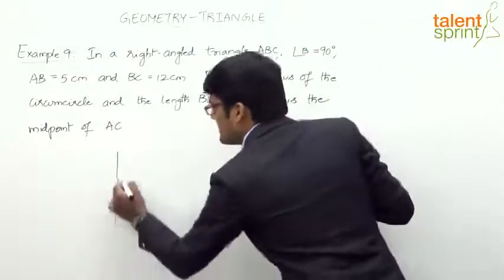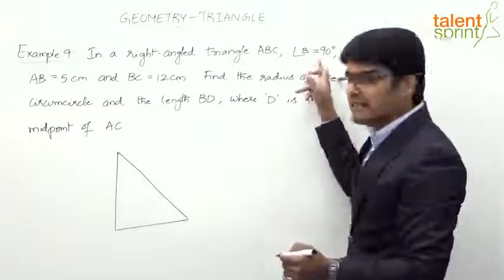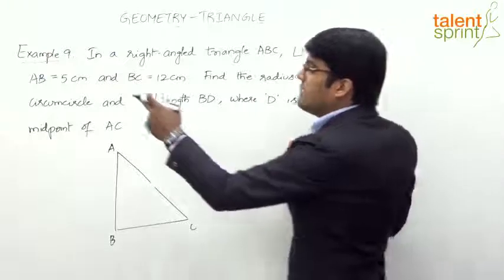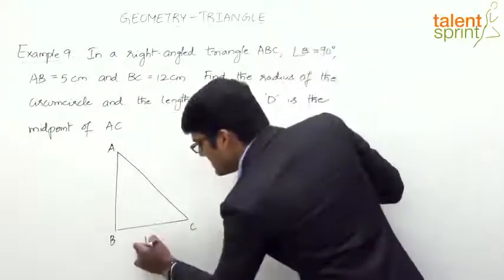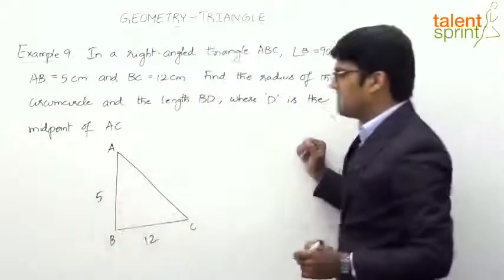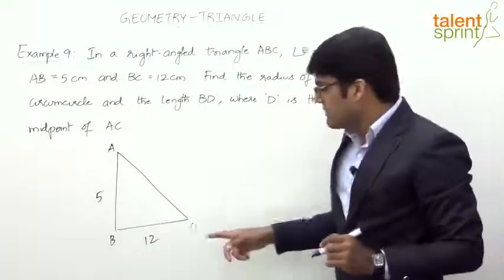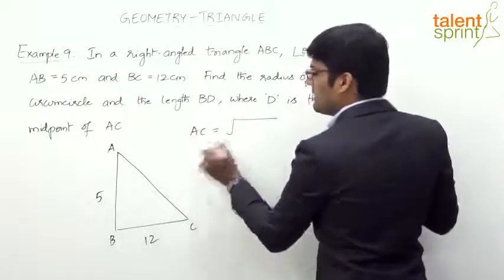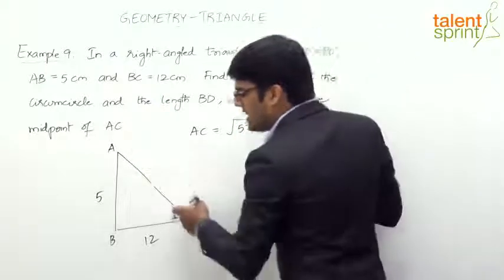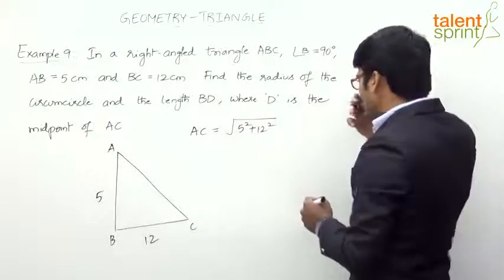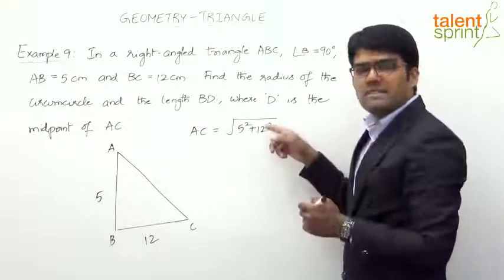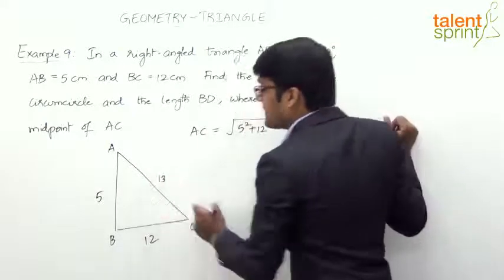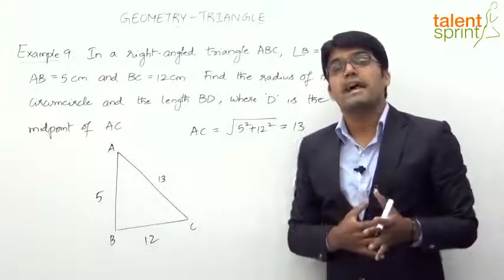Let's consider this right angle triangle. Angle B is 90 degrees, so this vertex is B, this is A, and this is C. AB is 5 centimeters and BC is 12 centimeters. By Pythagoras theorem, AC squared equals BC squared plus AB squared, so AC equals the square root of 5 squared plus 12 squared, which is the square root of 25 plus 144, giving us the square root of 169, which is 13. So AC is 13 centimeters.